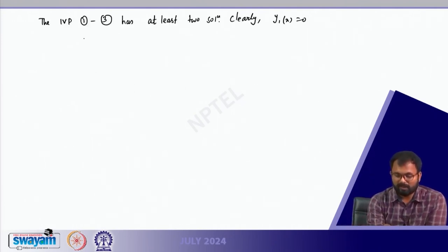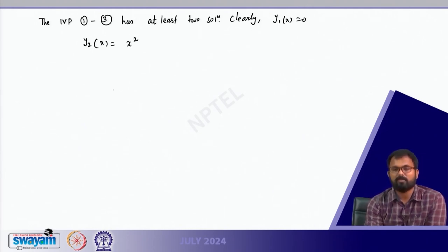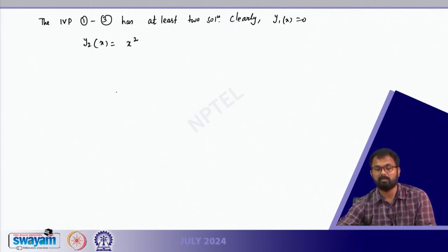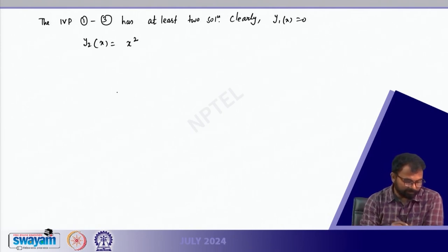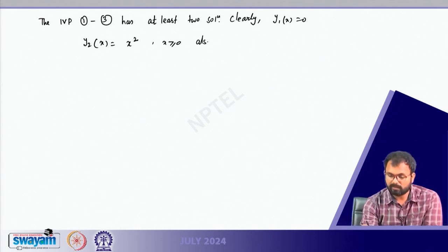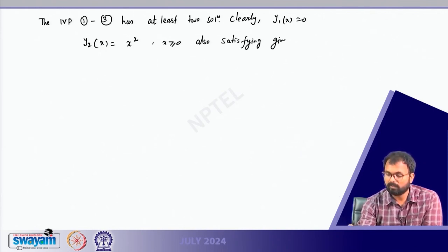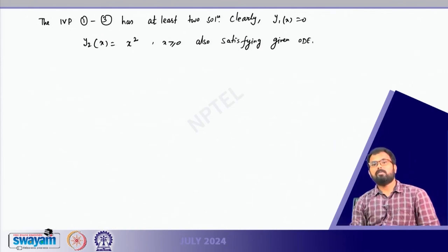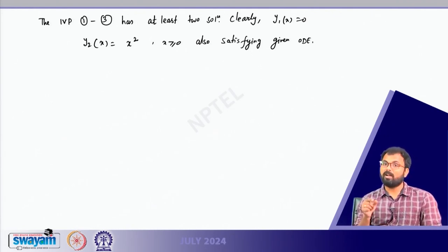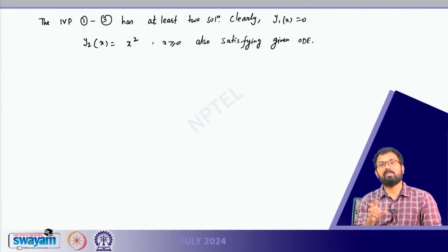The second solution is y₂(x) = x². On the left-hand side we get 2x, and on the right-hand side we also get 2x. So it satisfies the equation, and y₂(0) = 0 is also valid. So y₂(x) = x² for x ≥ 0 also satisfies the given ODE. This is strange — with one initial condition you should obtain a unique solution, but instead we get at least two solutions of the same ODE.